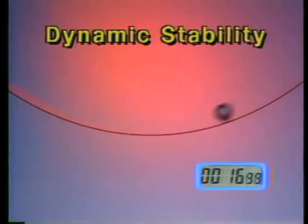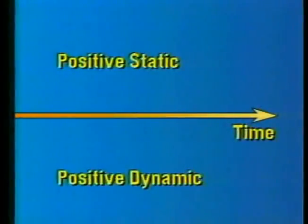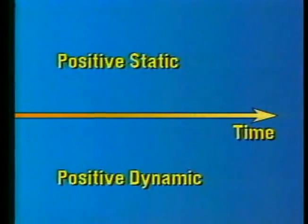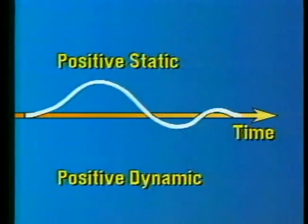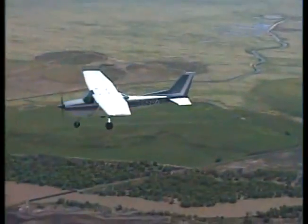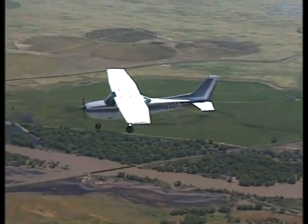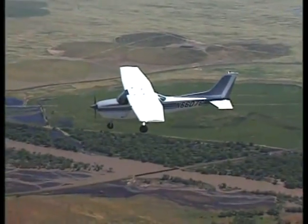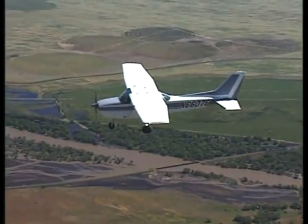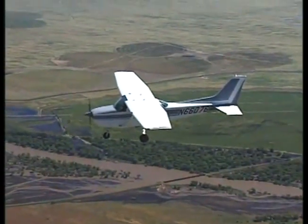How an object responds over time, as opposed to its initial reaction, is called dynamic stability. An airplane with both positive static and positive dynamic stability does not immediately return to its original attitude after displacement. Generally, it goes through a series of progressively smaller oscillations. A training aircraft is normally designed to exhibit both positive static and dynamic stability.